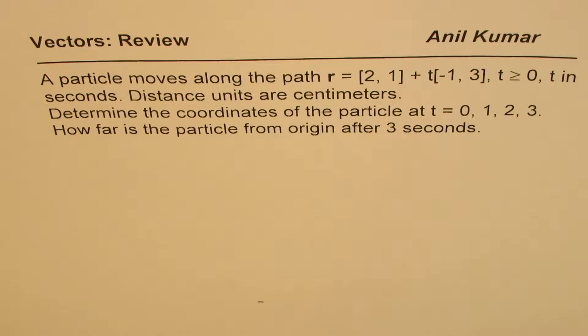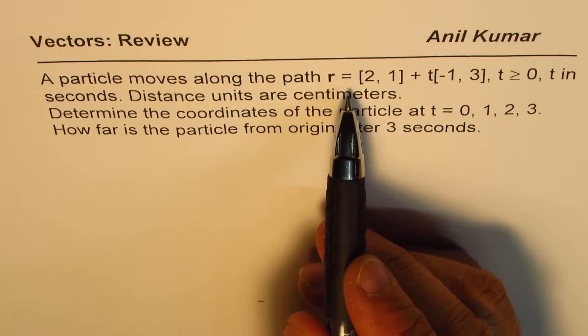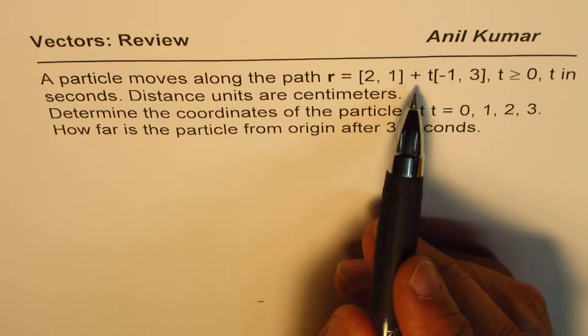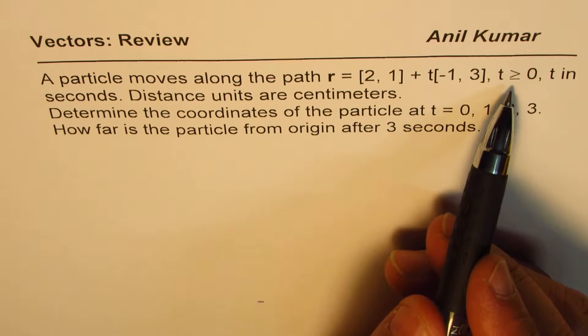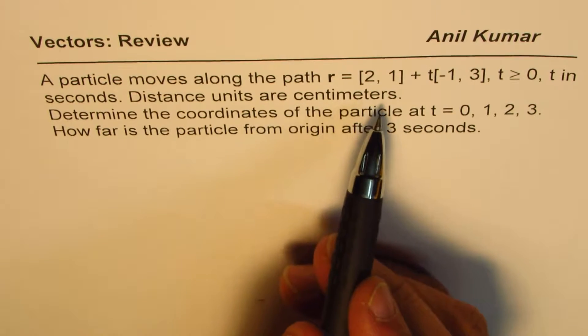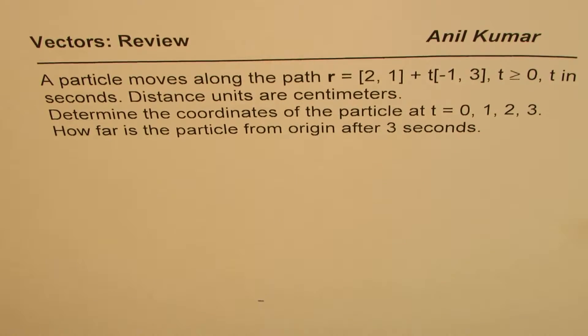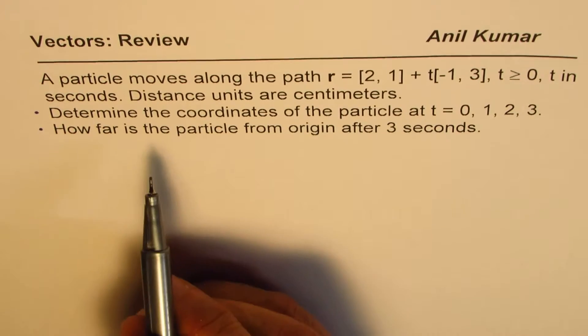I am Anil Kumar and here is another question to review the basic concepts of vectors. A particle moves along the path r equals [2,1] plus t times [-1,3] where t is greater than or equal to 0, t in seconds. Distance units are centimeters. Now we need to solve these two questions based on the given information.